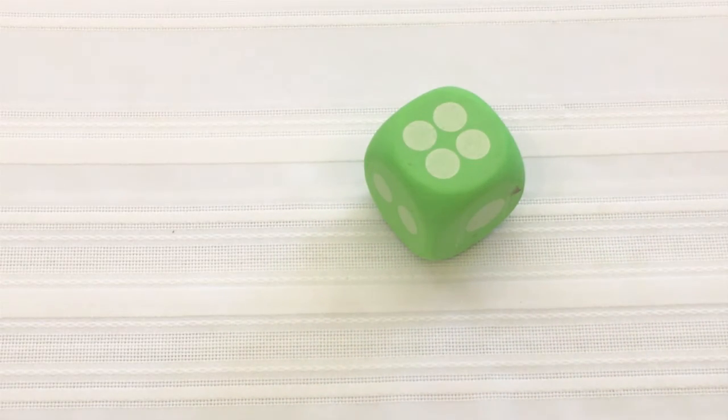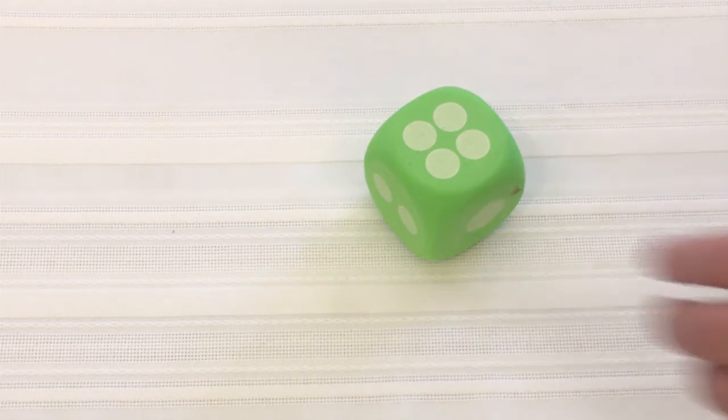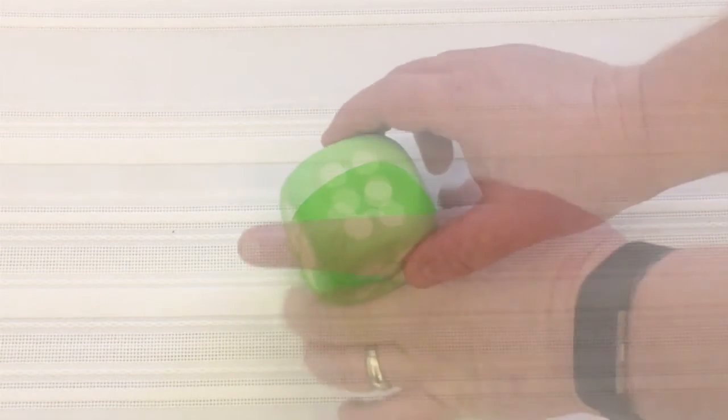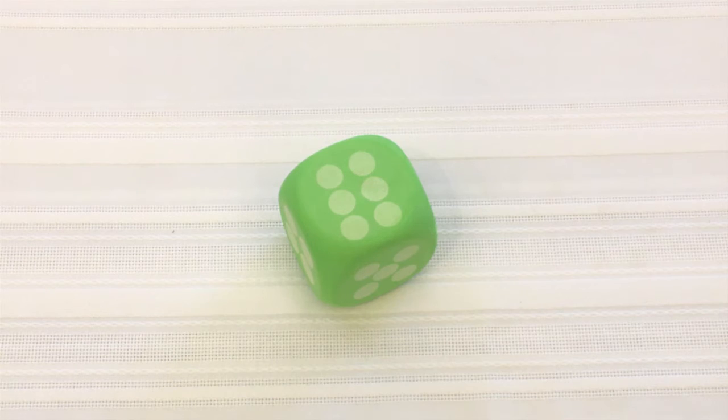If you rolled a four, pray for someone you need to forgive. If you rolled a five, pray for world concerns. And if you rolled a six, pray for someone who is hurting.